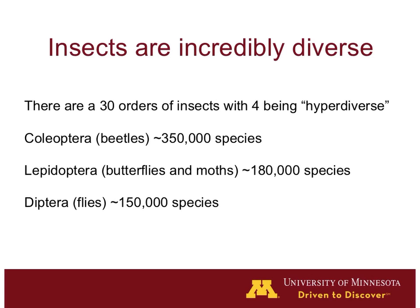Then we have the flies — Diptera — named because 'di' means two wings, unlike the other orders we're discussing that have four wings. They make up about 150,000 known species and are holometabolic — think of flies having their maggot stage. This group is probably a really understudied group for pollination. We actually think they're very important in pollinating a number of different plants, and the study of flies as pollinators is really just beginning.